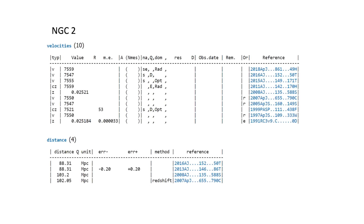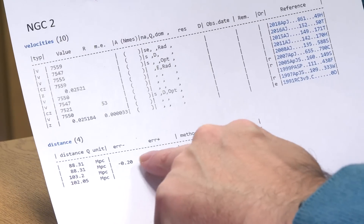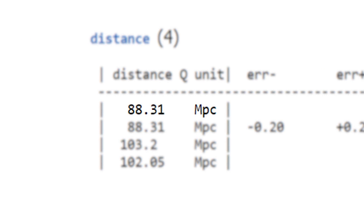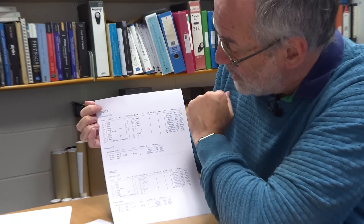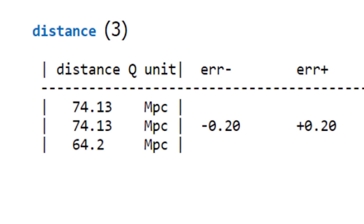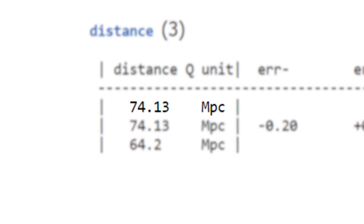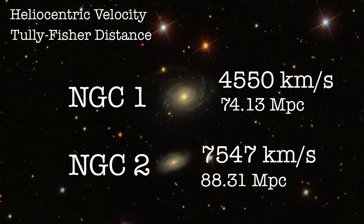Here are our two galaxies again. For NGC 2, there's a bunch of redshift measurements, but then there are redshift-independent distances. The measurement I was looking at was from a 2013 paper — a relatively recent Tully-Fisher measurement — which gives 88 megaparsecs, so 88 million parsecs away. For NGC 1, the same Tully-Fisher measurement from that 2013 paper gives 74 megaparsecs — 74 million parsecs away. So we still have the answer that NGC 2 is further away than NGC 1, but by this direct measurement it's only about 20% further away — 74 versus 88 — whereas the Hubble law suggested about 50-60% further.